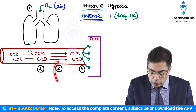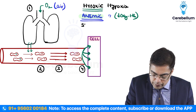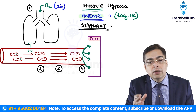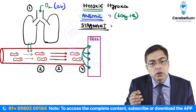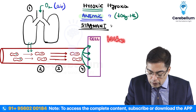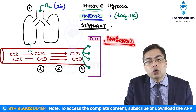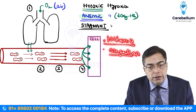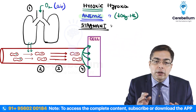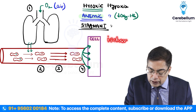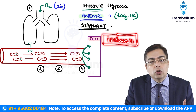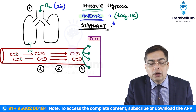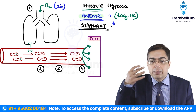A third type is stagnant hypoxia, where the problem occurs at the level of vascular supply. This can be arterial — reduced blood supply to a tissue, called ischemia — or venous — obstruction of venous drainage, called congestion. In most situations, the arterial problem predominates. Therefore, the commonest cause of hypoxia at the cellular level is ischemia, which is also the commonest cause of cell injury overall.